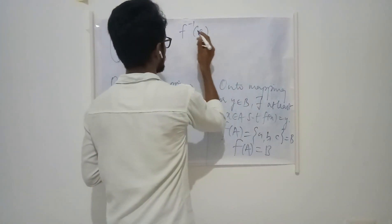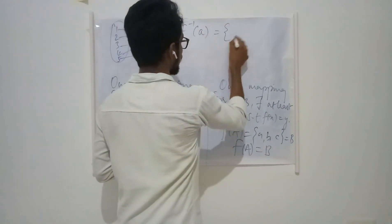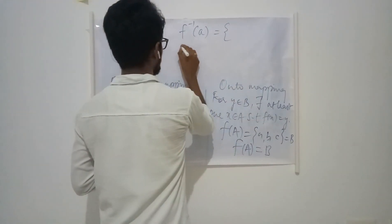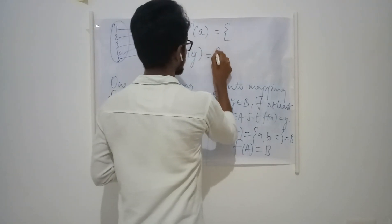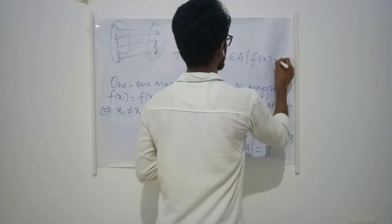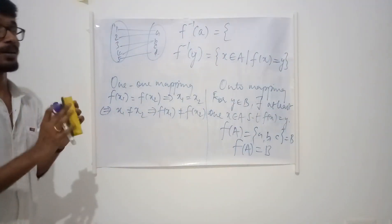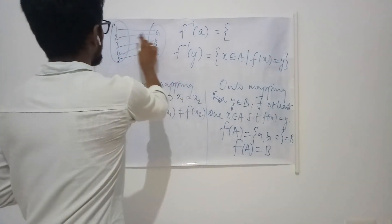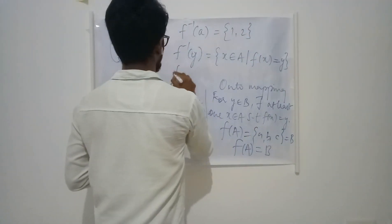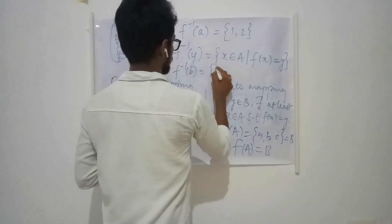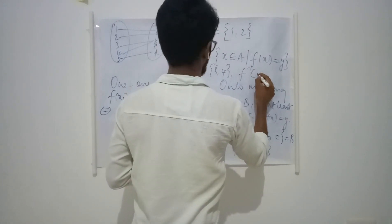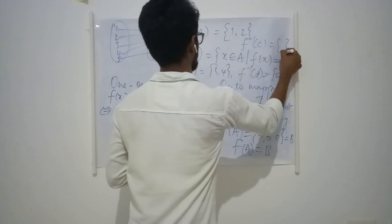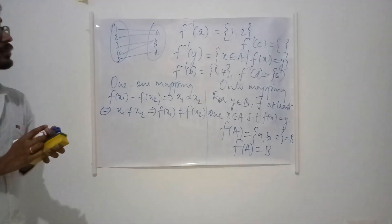The inverse image of A consists of all such elements in the domain that are mapped with A. Generally, the inverse image of y is the set of all x in the domain such that f(x) = y. It may not be a single element — it can be a set as well. So f⁻¹(A) = {1, 2}, f⁻¹(B) = {3, 4}, f⁻¹(D) = {5}, and f⁻¹(C) is empty, because there is no element which is associated with C.